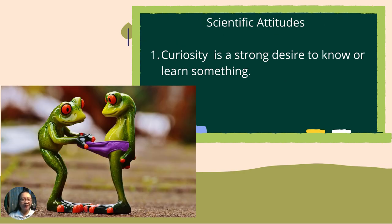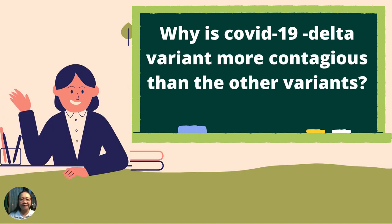Let us now study the different scientific attitudes. Look at the image — the frog is curious what the other frog is wearing. The frog might be thinking: what's that? Why do you have that? Why don't I have that? So curiosity is a strong desire to know or learn something. Another example: why is the COVID-19 Delta variant more contagious than the other variants? So curiosity asks the question, why?